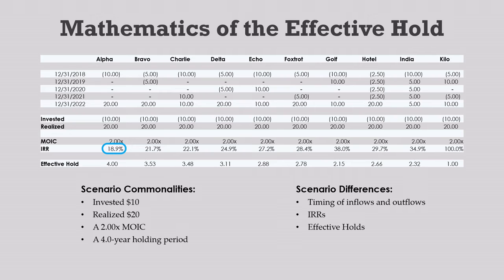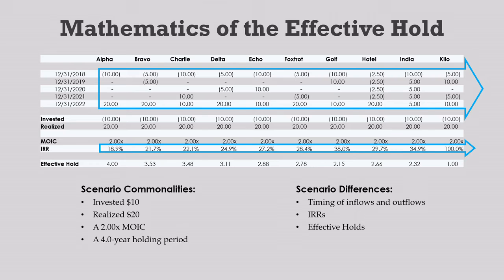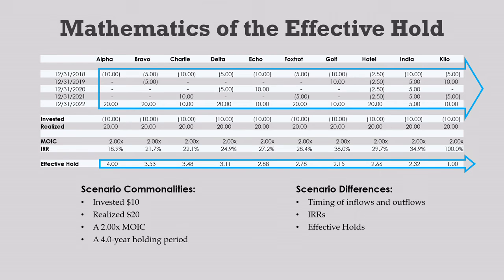The other scenarios achieved their 2x return while having less capital at risk or in play during the holding period. While every scenario ultimately invested 10 and returned 20, the latter were able to do it while investing less capital up front or taking chips off the table earlier. We can see that as a pattern as we move from left to right — the IRRs are going up because the capital is being deployed more efficiently. They are either investing capital more slowly or returning it more quickly, and this gets reflected in the effective holding period, which gets lower as we move from left to right.